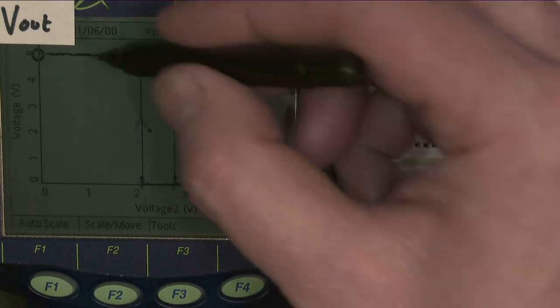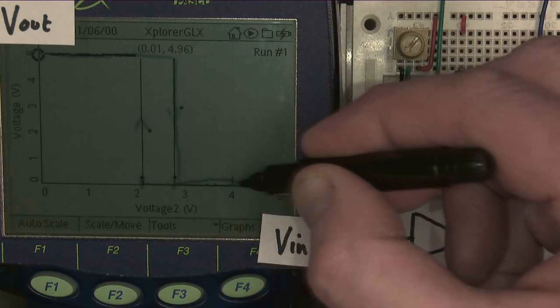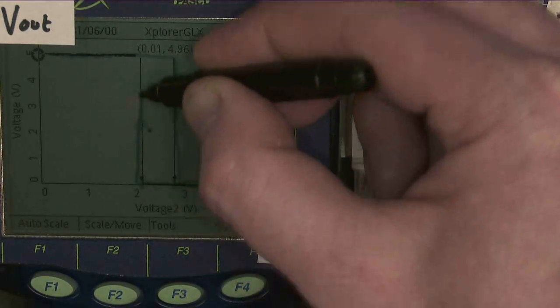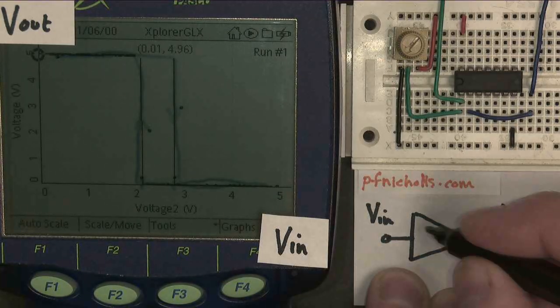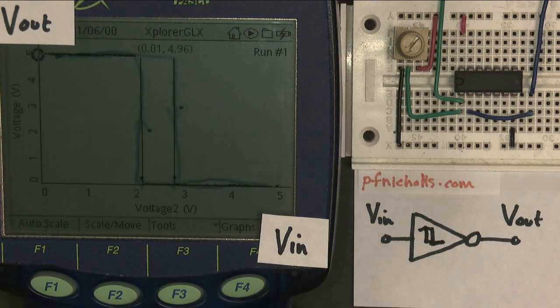The symbol for a Schmitt gate is this symbol here. We come along, down, across, and back, and back again. And there we go. That's my Schmitt logic gate.